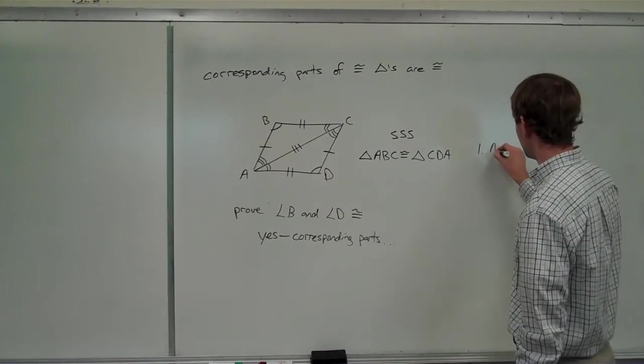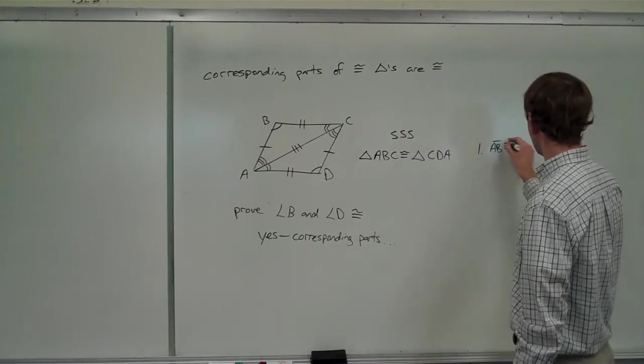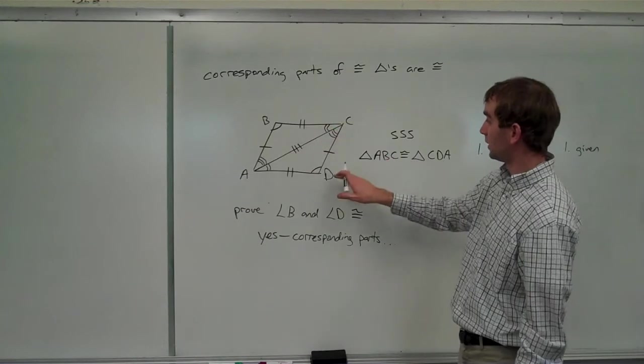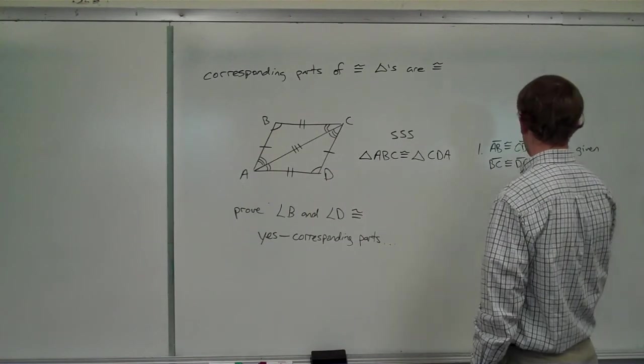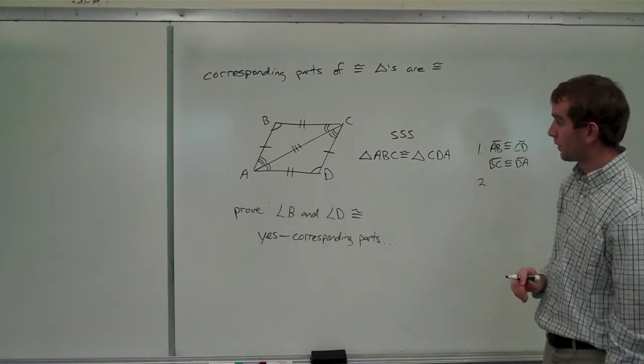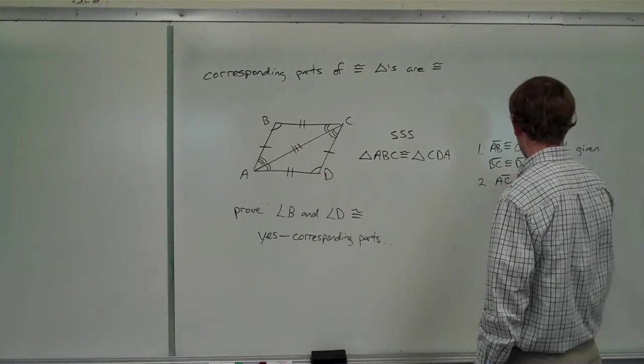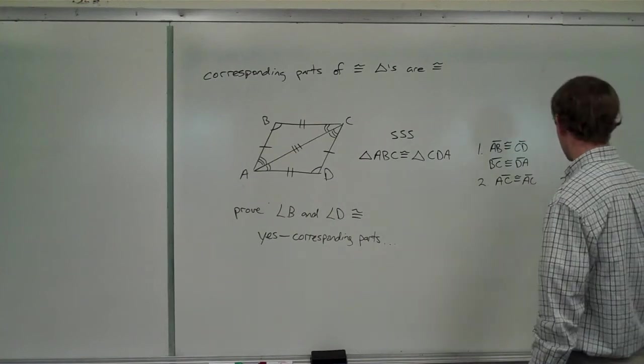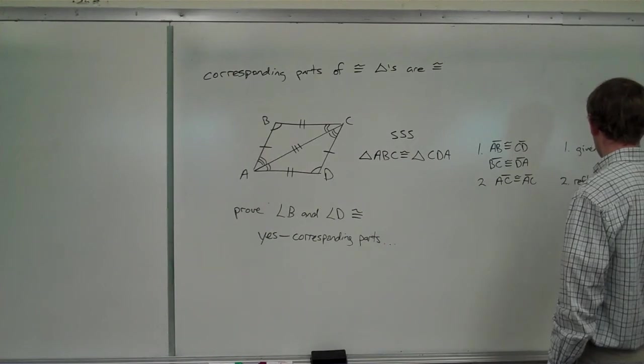We were given, in this case, that side AB was congruent to CD. We were also told, as a given, BC and DA are congruent. For the same reason, also a given. And then, next, we said that this third side had to be congruent to itself. So, AC, congruent to AC because of the reflexive property, right? It's the same side for both triangles.